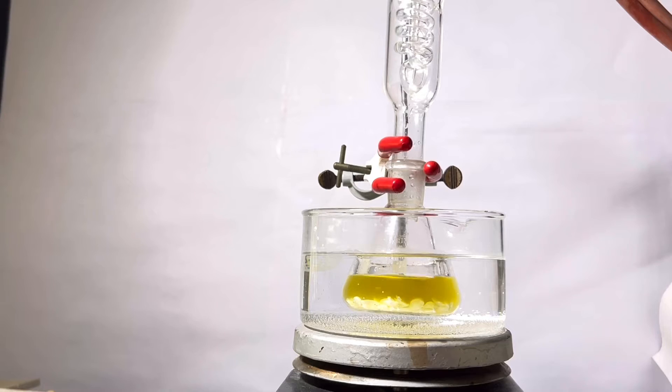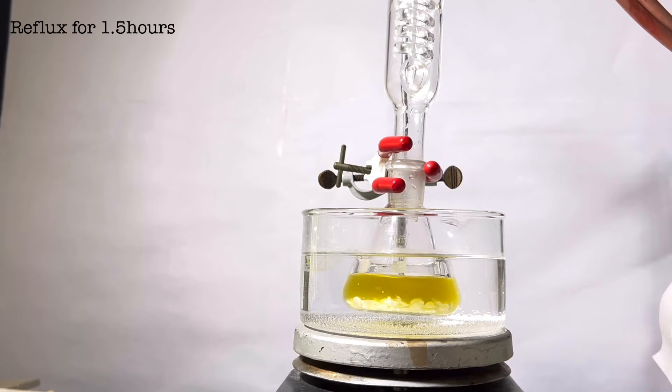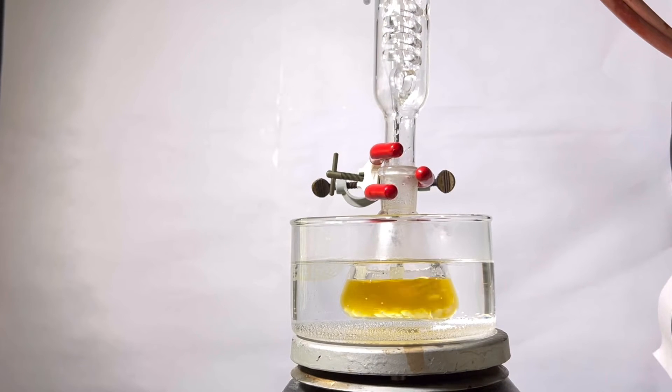Now a dimroth condenser was attached on top of the flask and the flask was placed in a boiling water bath. Cold water was circulated through the condenser and the reaction mixture was refluxed for 1.5 hours.